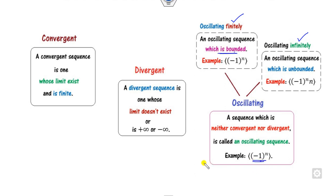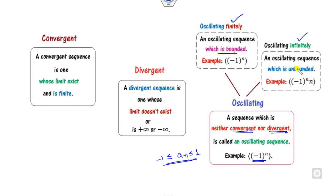The oscillating sequence is further divided into two categories: oscillating finitely and oscillating infinitely, depending on whether the sequence is bounded or not. Clearly, the sequence that lies between minus 1 and plus 1 is a bounded sequence. Anything which is bounded but neither convergent nor divergent is called oscillating finitely. On the other hand, if it is unbounded, it is called oscillating infinitely.